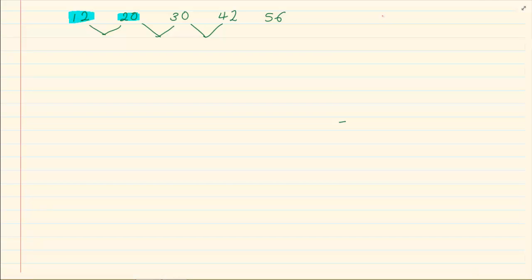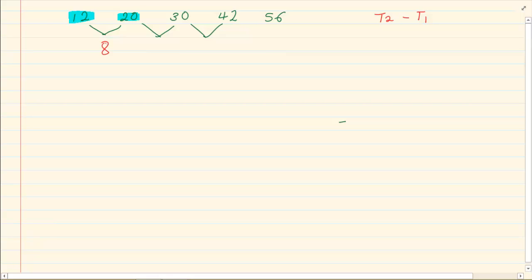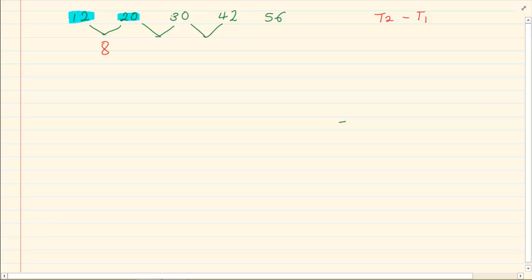So when you take term 2 minus term 1, look at what happens: 20 minus 12 gives us 8. Now we are going to say term 3 minus term 2, so we say 30 minus 20 and we get 10.